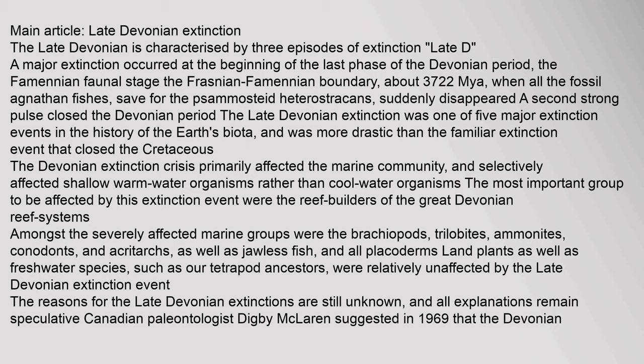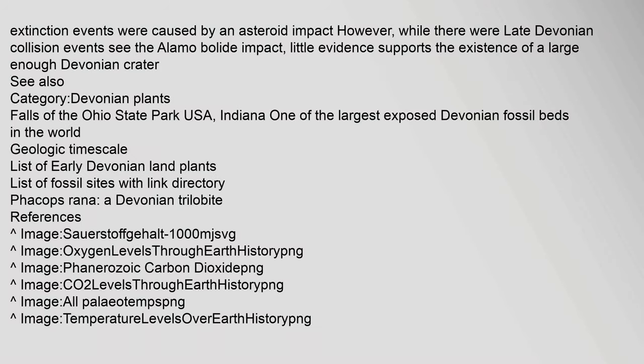The Devonian extinction crisis primarily affected the marine community, and selectively affected shallow warm water organisms rather than cool water organisms. The most important group to be affected by this extinction event were the reef builders of the great Devonian reef systems. Among the severely affected marine groups were the brachiopods, trilobites, ammonites, conodonts, and acritarchs, as well as jawless fish and all placoderms. Land plants as well as freshwater species, such as our tetrapod ancestors, were relatively unaffected. The reasons for the Late Devonian extinctions are still unknown, and all explanations remain speculative. Canadian paleontologist Digby McLaren suggested in 1969 that the Devonian extinction events were caused by an asteroid impact; however, little evidence supports the existence of a large enough Devonian crater.